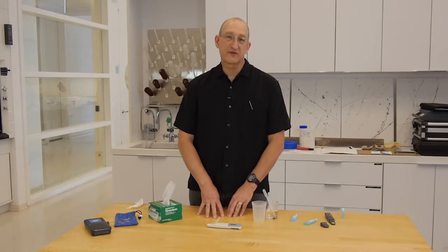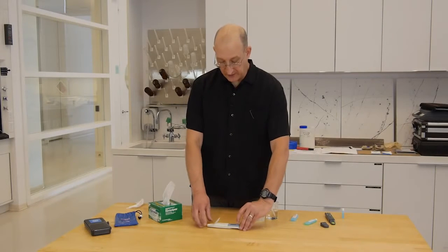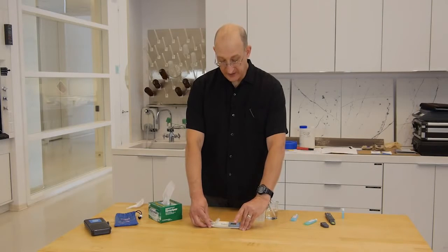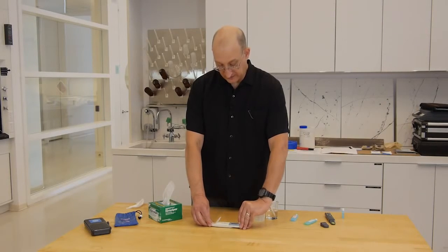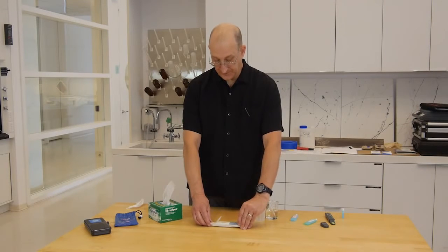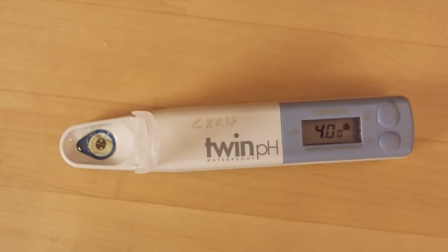Again, we wait for the happy face. We have our happy face, so we push the calibrate button. Initially, it wants to calibrate to pH 7. We don't want that. We push again, and we're now calibrating to pH 4. If we were calibrating to 10, we would push one more time, and we would get the calibration for 10.